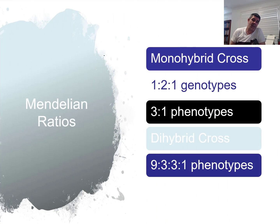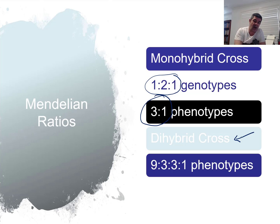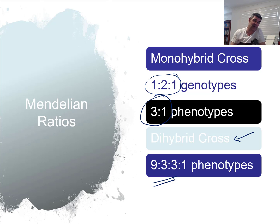Looking at our Mendelian ratios: in monohybrid crosses, the genotypic ratio is 1:2:1 and the phenotypic ratio is 3:1 in favour of the dominant trait over the recessive. For dihybrid crosses — which involve two traits making the Punnett square larger and more complex — the ratio is 9:3:3:1. The practice of solving them using Punnett squares is exactly the same.